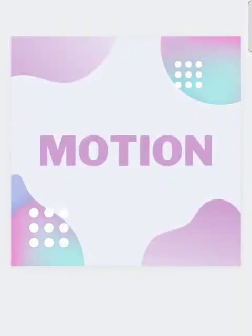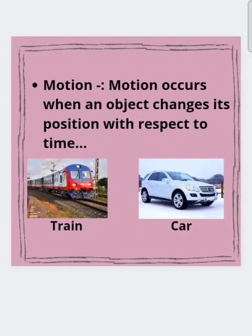Hello everyone, it's me Nonit and today we will discuss one of the important chapters of physics, that is motion. Motion occurs when an object changes its position with respect to time. Take an example of a train and a car — both are in motion because they change their position with respect to time.